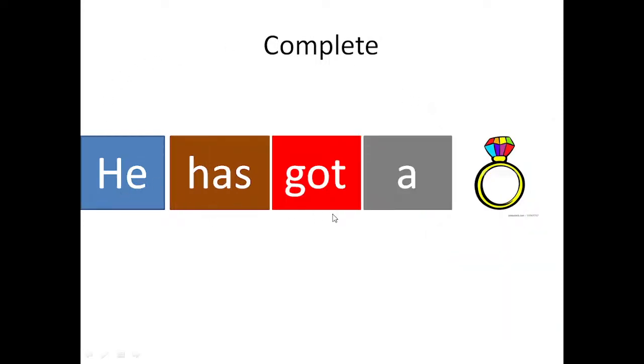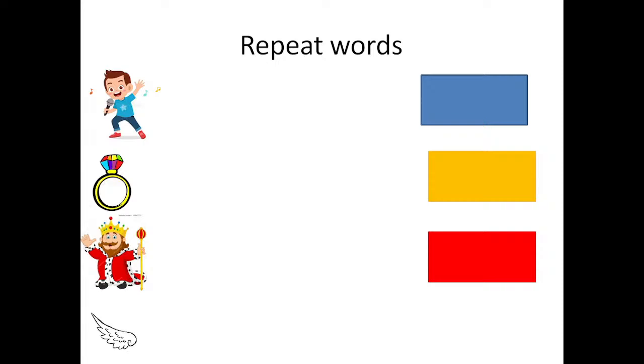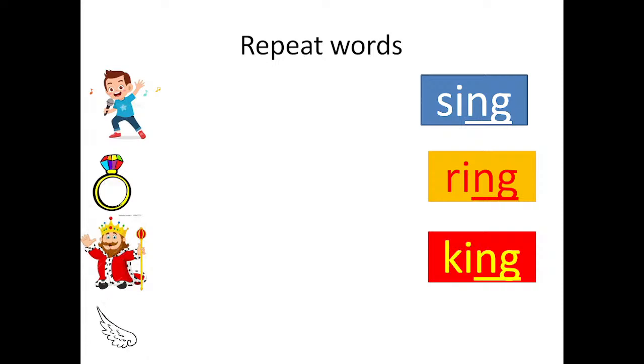Fantastic! And the last word: king. He is a king. He has got a ring. He can sing. Let's repeat the words. What is it? Sing, sing. Who is he? King. What is it? King, wing, wing. See you soon, goodbye. See you soon, bye.